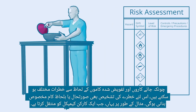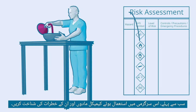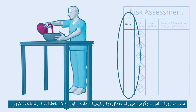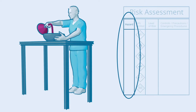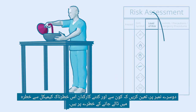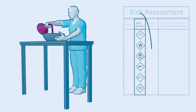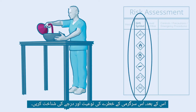For example, when a worker transfers a chemical: first, identify the chemical substances used in this activity and their hazards. Second, locate which and how many workers are possibly at risk of exposure to that hazardous chemical. Next, identify the nature and level of risk of that activity.